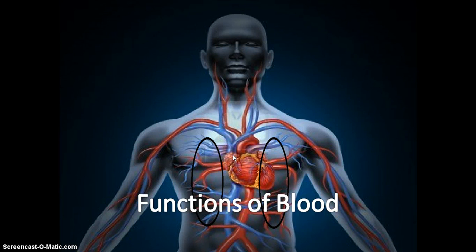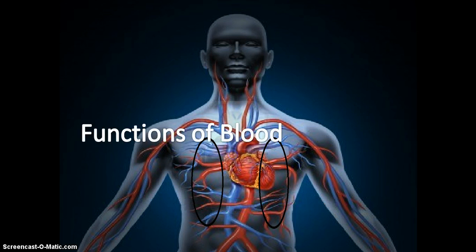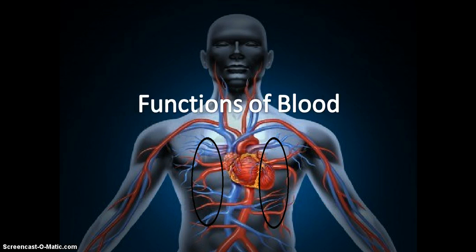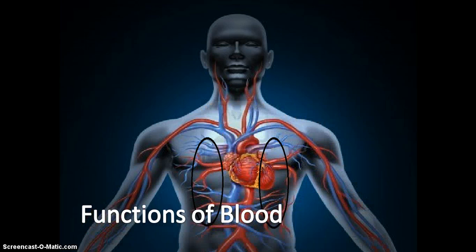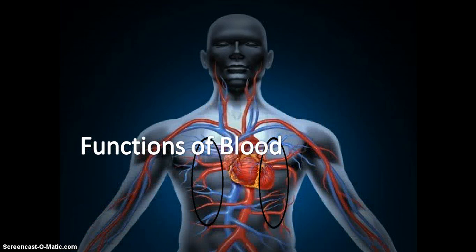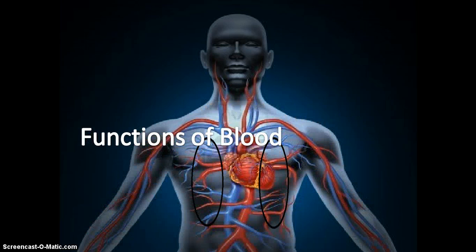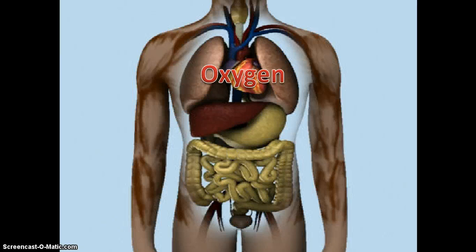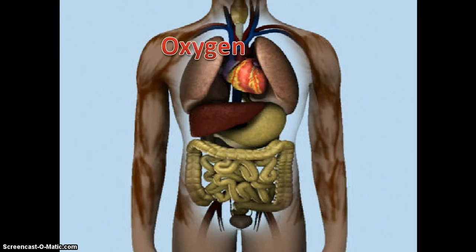Blood is the red colored liquid which circulates in the body. The important functions of blood in our body are as follows: blood carries oxygen from the lungs to different parts of our body.